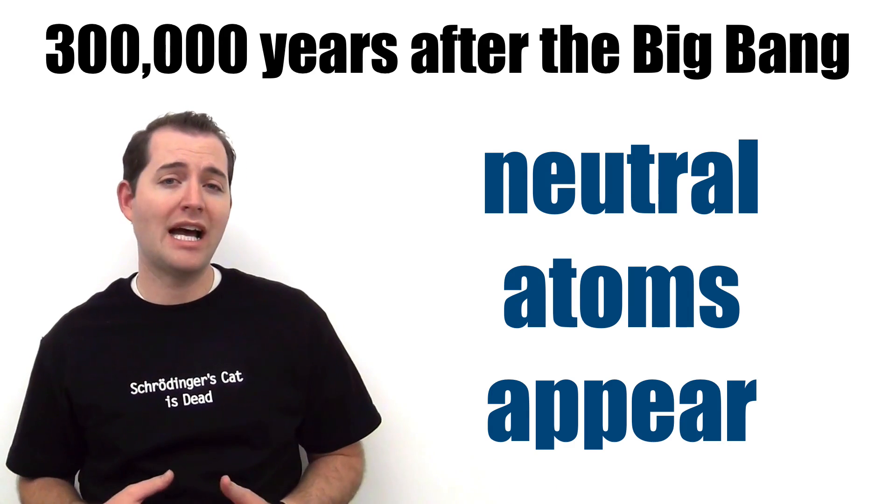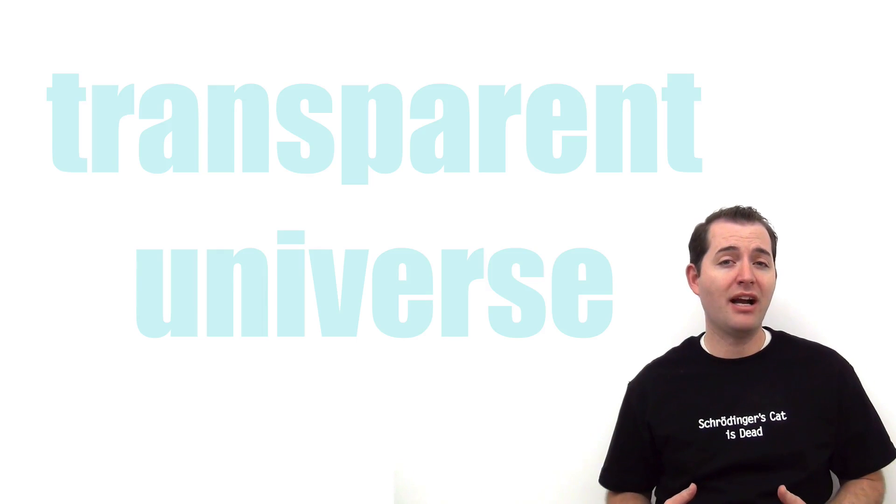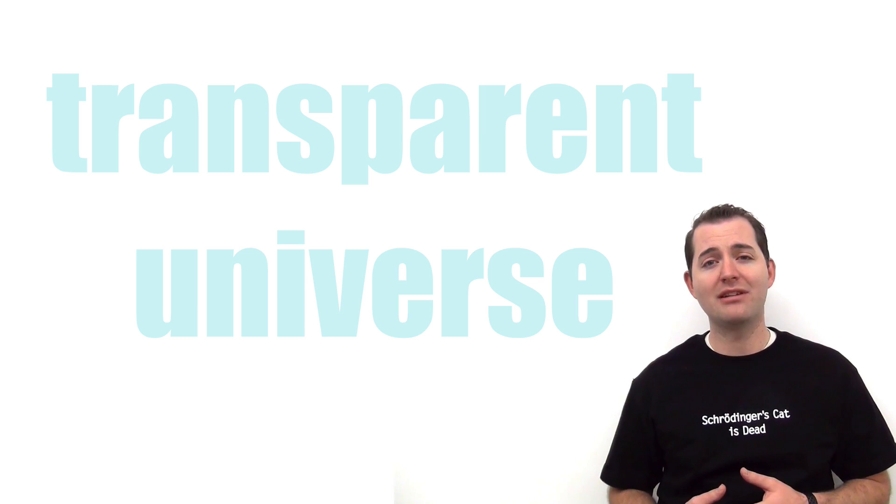This is the first time that neutral atoms were able to form in the early universe. This significant event caused the universe to become transparent and to lose that uniform glow that was there because of the plasma. This made it so that the universe was no longer filled with an opaque fog.